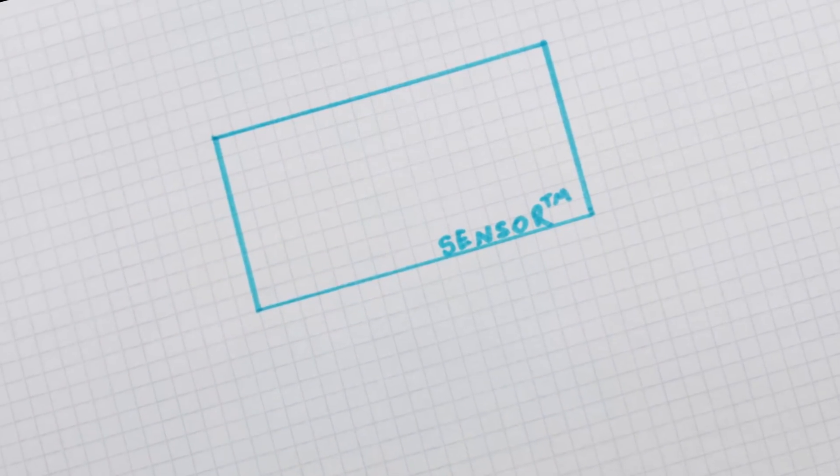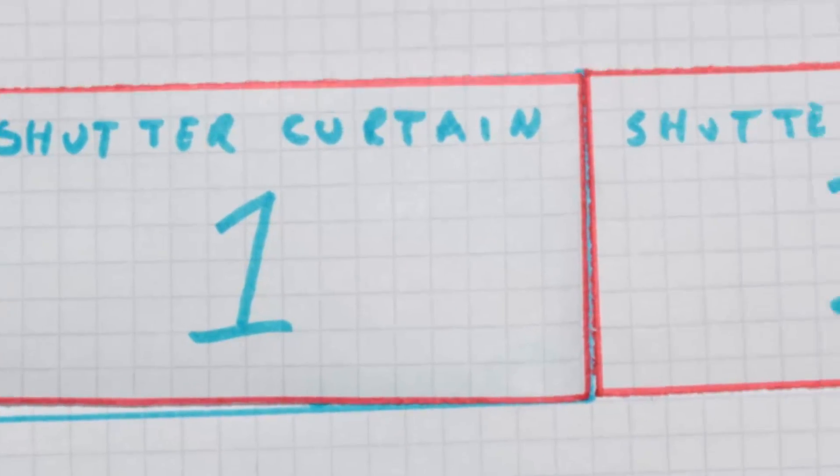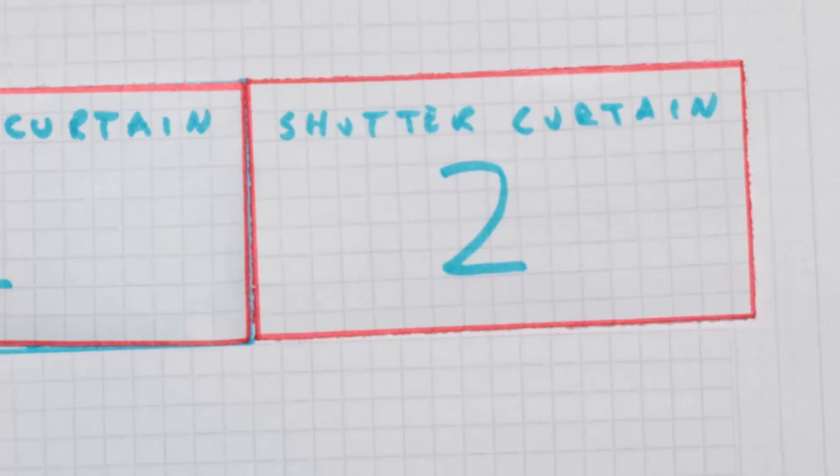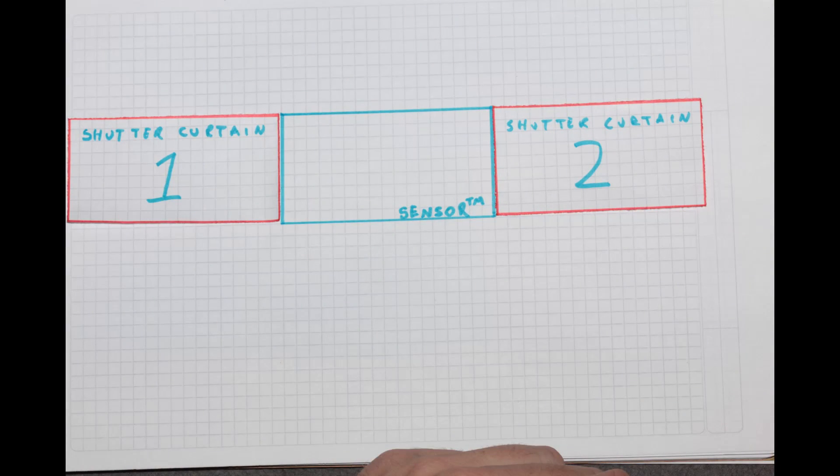Now, the way this is controlled is by a set of shutter curtains. When you press the shutter button, the first curtain moves out of the way, and then it stays open for the amount of time you've dialed in, like a hundredth of a second.